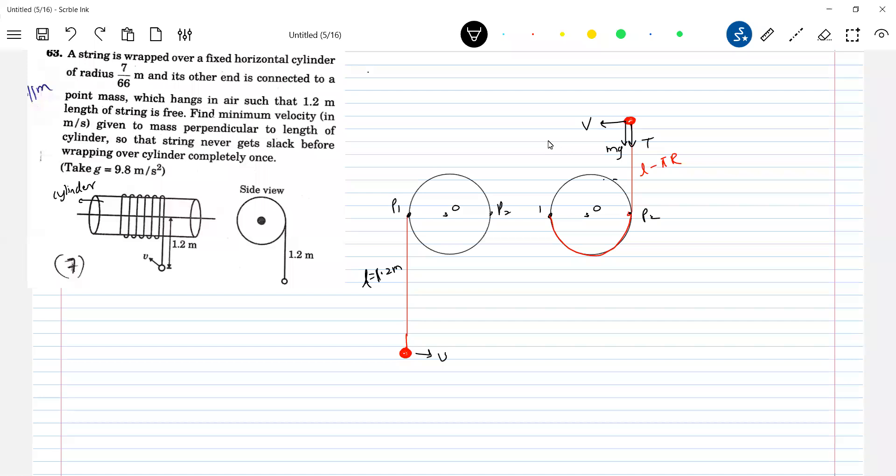Okay. Now this will be P1. So how to get that minimum velocity is asking. So now first, what is the thing here? So T plus Mg equal to Mv square over L minus pi R. If T become zero, then V will become minimum. So therefore this V minimum square is equal to g into L minus pi R. Will I agree with this?